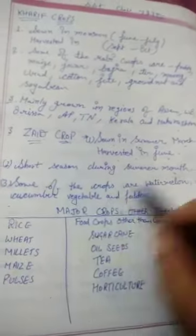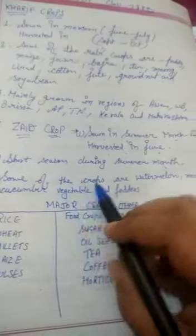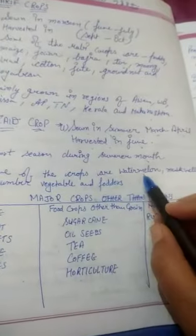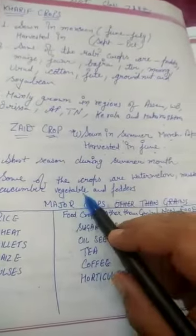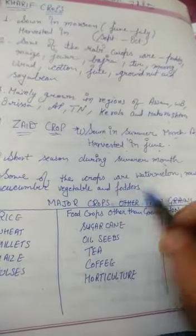Some of the Zaid crops are watermelon, musk melon, cucumber, vegetables and fodders.